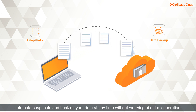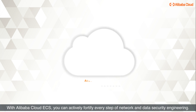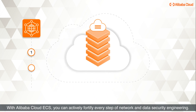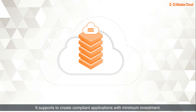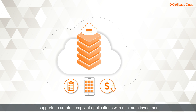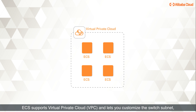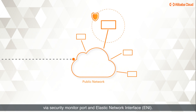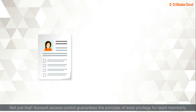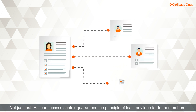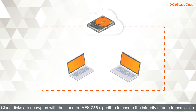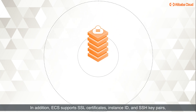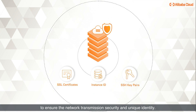Network Security and Data Encryption: With Alibaba Cloud ECS, you can actively fortify every step of network and data security engineering, supporting compliant applications with minimum investment. ECS supports virtual private cloud and lets you customize the switch subnet, isolate with the public network, and fully control network access via security monitor port and elastic network interface. Account access control guarantees the principle of least privilege for team members. Cloud disks are encrypted with the standard AES-256 algorithm. ECS also supports SSL certificates, instance ID, and SSH key pairs to ensure network transmission security and unique identity.